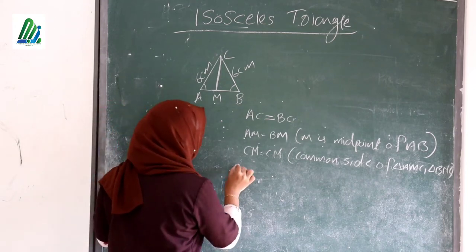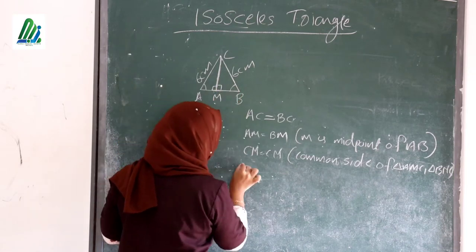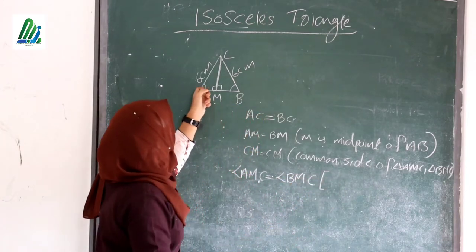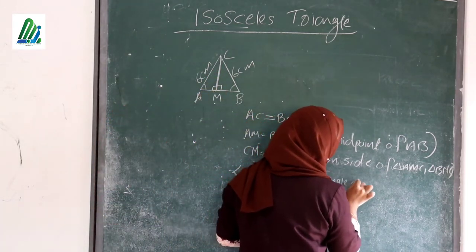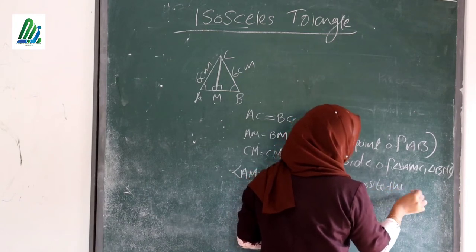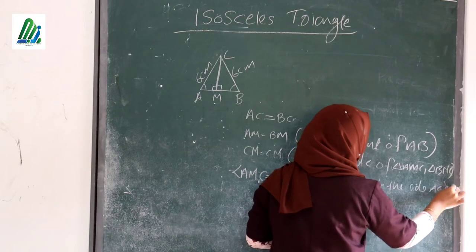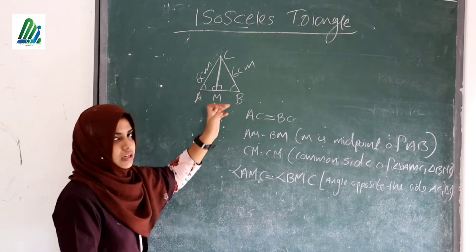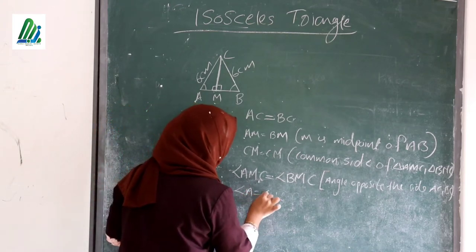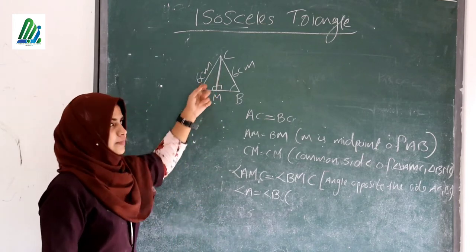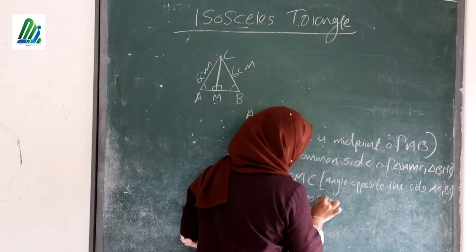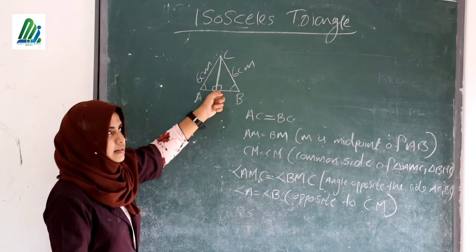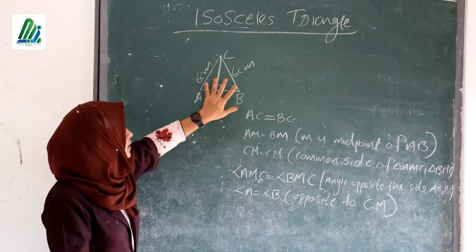So we can write that angle AMC and angle BMC are also equal, because the angle is opposite to the sides AC and BC respectively. Angle A and angle B are also equal because they are both opposite to the common side CM.